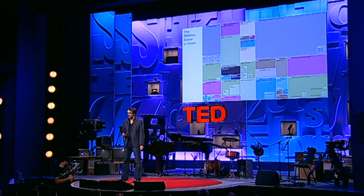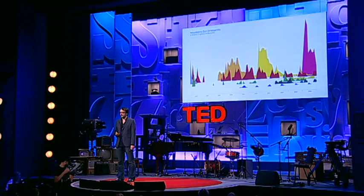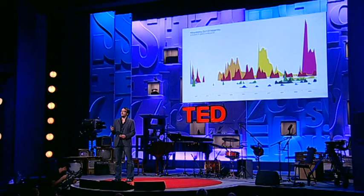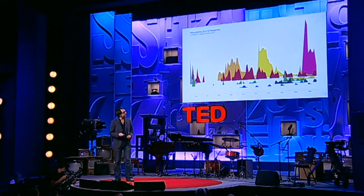I want to show you another landscape now — I want you to imagine what a landscape of the world's fears might look like. This is 'Mountains out of Molehills,' a timeline of global media panic. The height here is the intensity of certain fears as reported in the media.